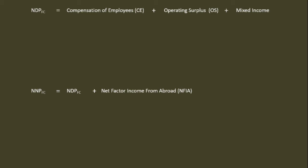We shall go ahead with the calculation of net domestic product at factor cost. In our problem, compensation of employees is not given directly. We have to calculate it from wages and salaries and employer's contribution to Social Security Scheme. Compensation of employees is equal to wages and salaries plus employer's contribution to Social Security Scheme.